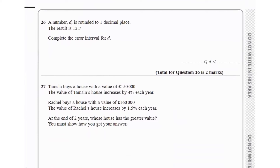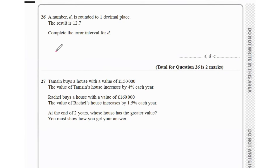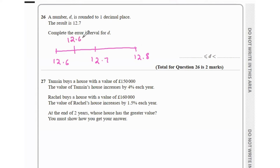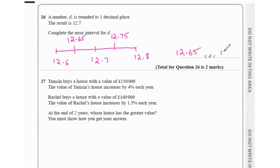Question 26 says a number d is rounded to one decimal place and the result is 12.7. Complete the error interval for d. 12.7 lies between 12.6 and 12.8. If we round 12.65 to one decimal place we get 12.7, and 12.75 rounds to 12.8. Since the upper bound uses strict inequality, d could be up to but not including 12.75. So the interval is 12.65 ≤ d < 12.75.